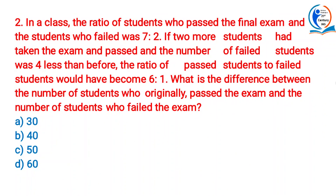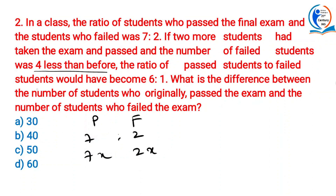Next question. In a class, the ratio of students who passed the final exam and the students who failed was 7 to 2. In absolute numbers, take it as 7x and 2x. If 2 more students had taken the exam and passed, and the number of failed students was 4 less than before, the ratio of passed students to failed students would have been 6 to 1. Now, the total number of students is 7x + 2x = 9x.